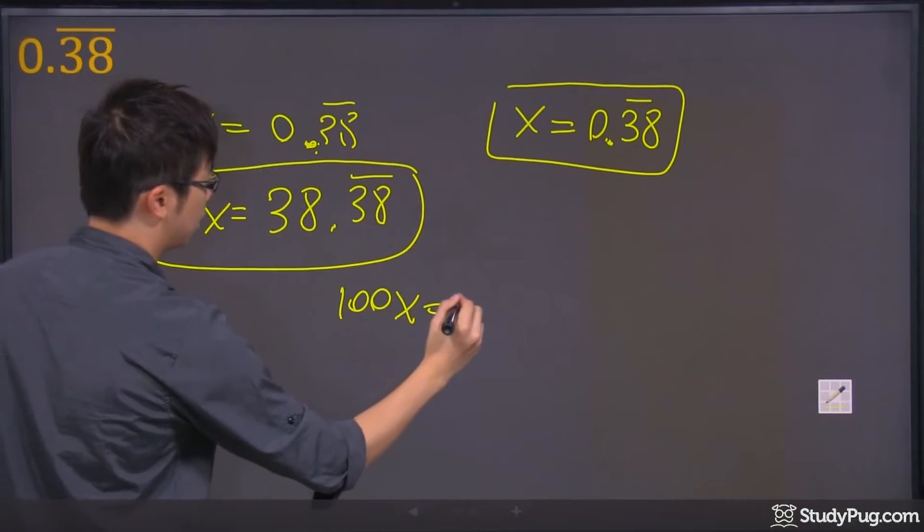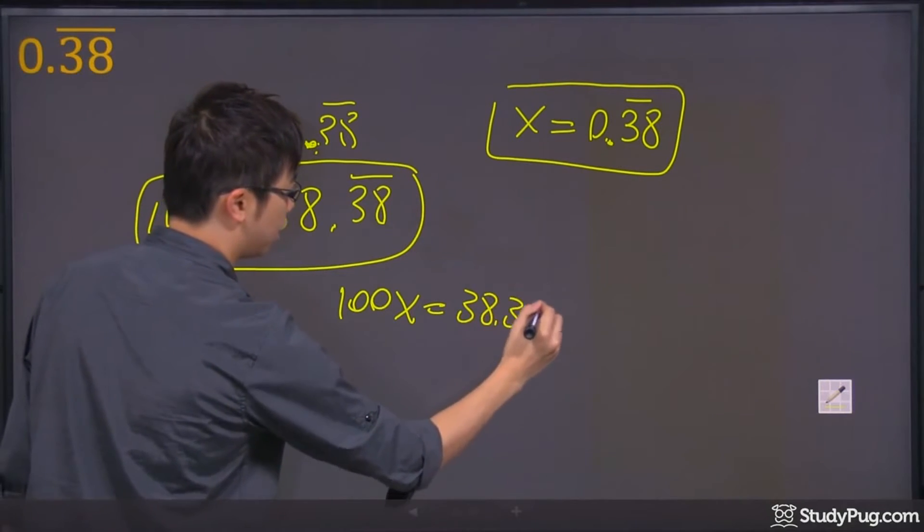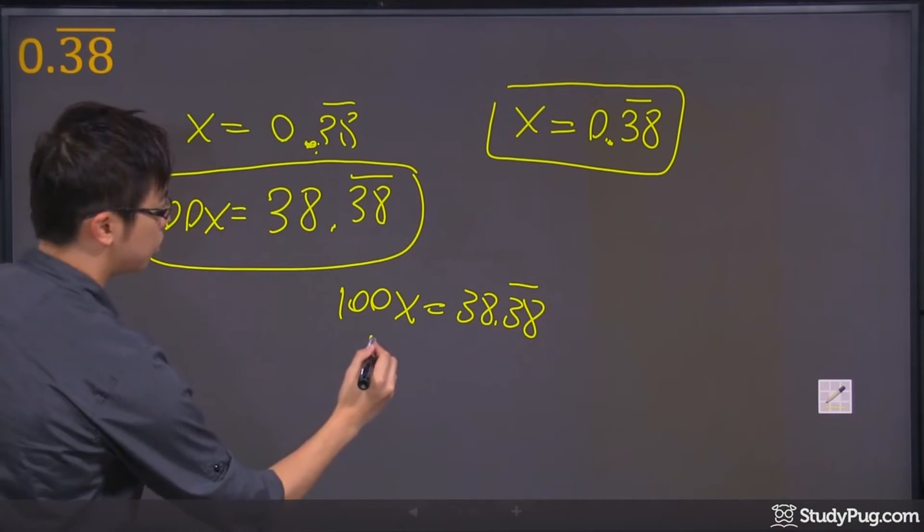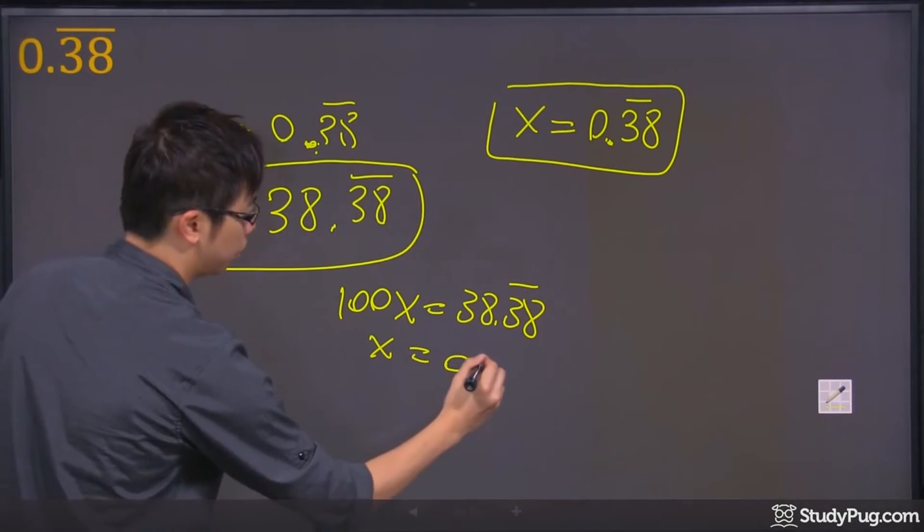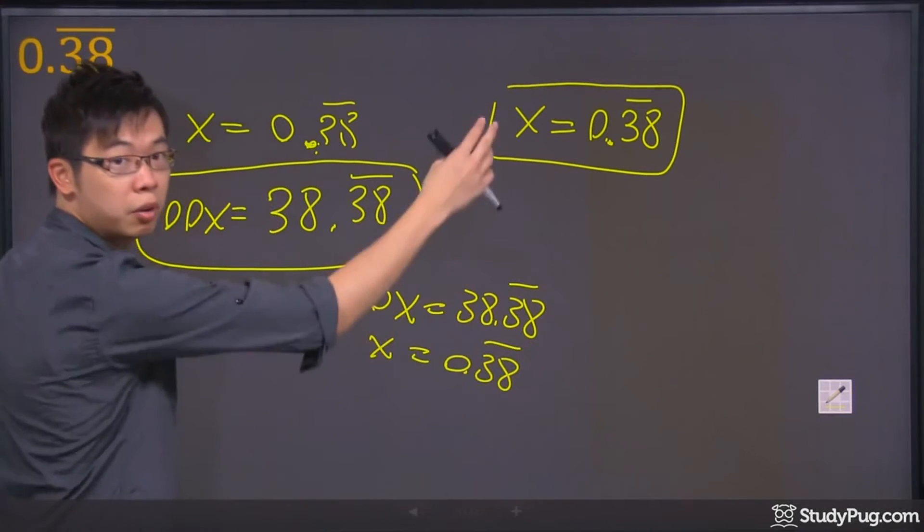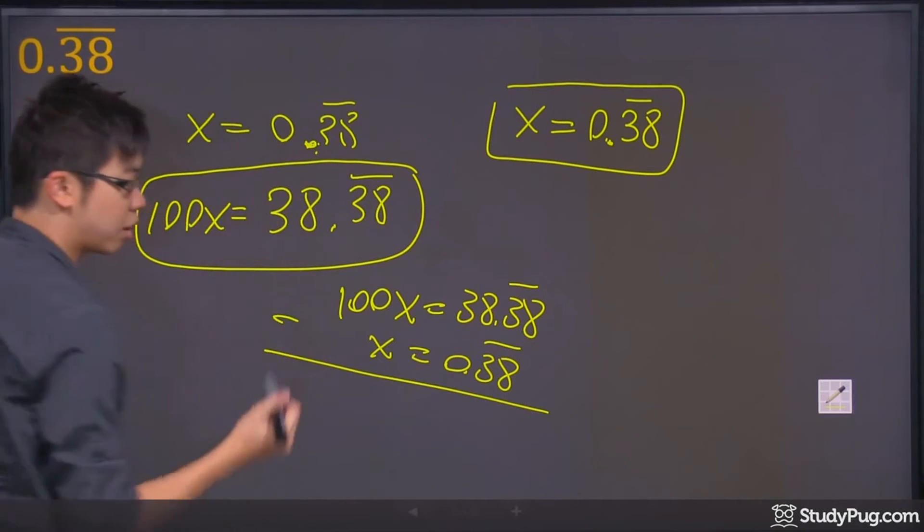I will recommend you rewrite them again, 38.38 repeating here, and just put the x here and the 0.38. You're just copying down both equations down. And then you're going to do subtraction.